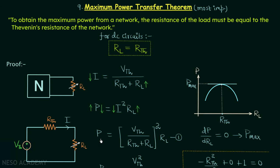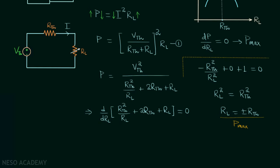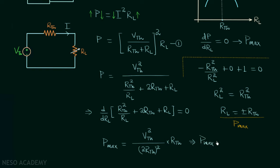Now let us find the maximum power P_max using equation number 1. Substituting RL equal to RTH, we get P_max equal to VTH squared divided by (RTH plus RTH) whole squared, multiplied by RTH. This simplifies to VTH squared divided by 4·RTH squared, multiplied by RTH. The RTH terms cancel, giving the maximum power equal to VTH squared divided by 4·RTH — that is, the square of the Thevenin's equivalent voltage divided by 4 times the Thevenin's equivalent resistance. Remember these two key results.